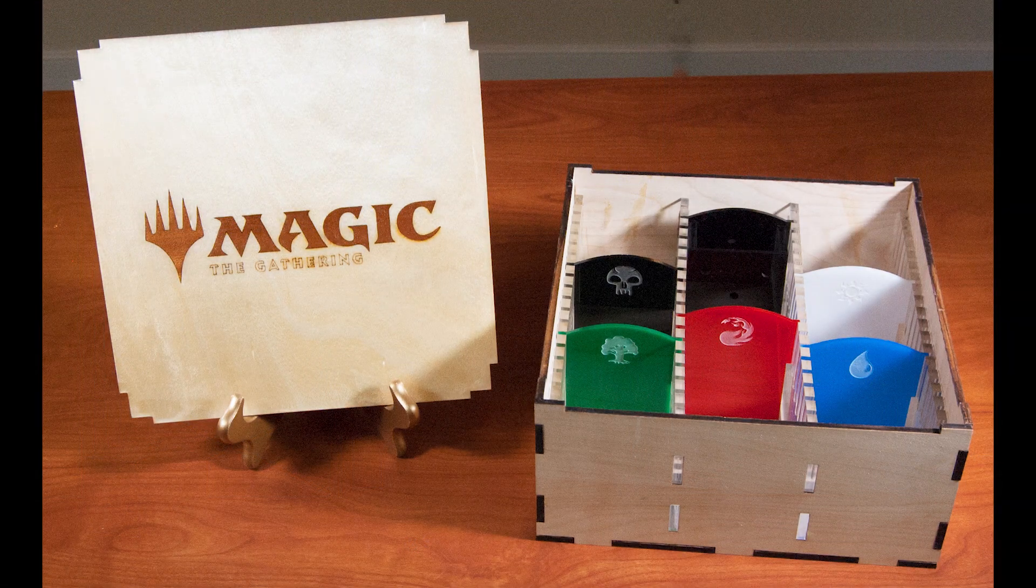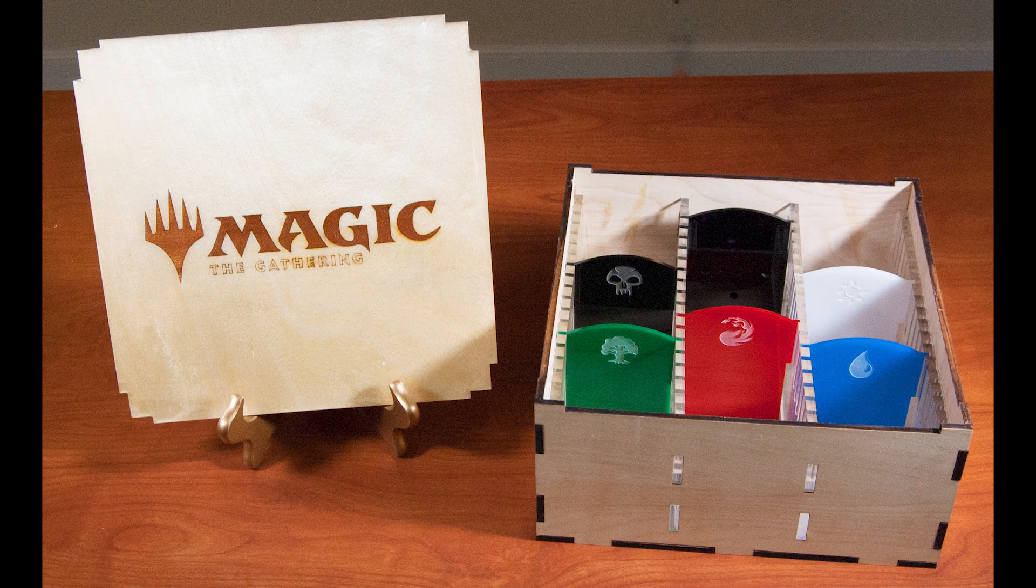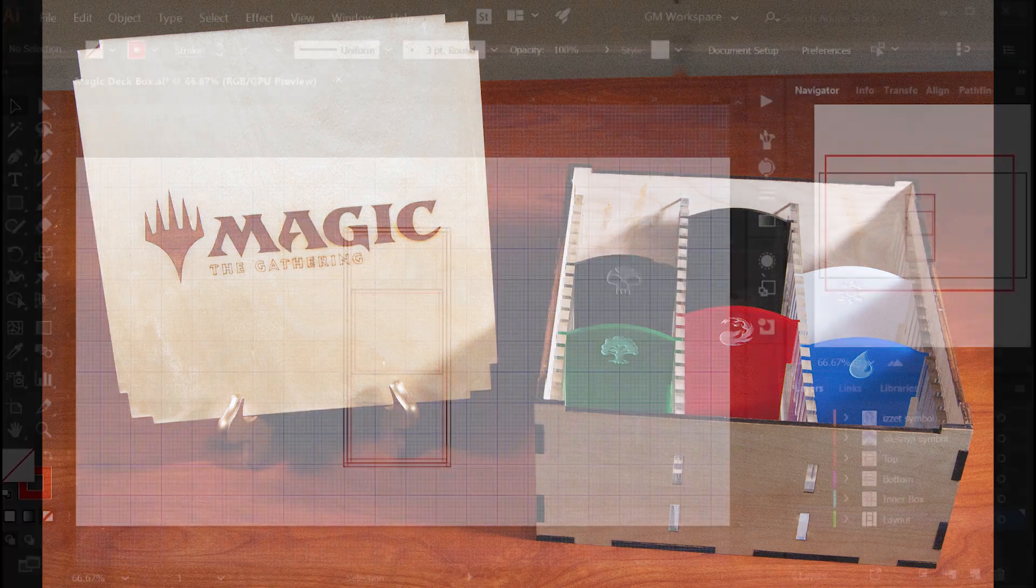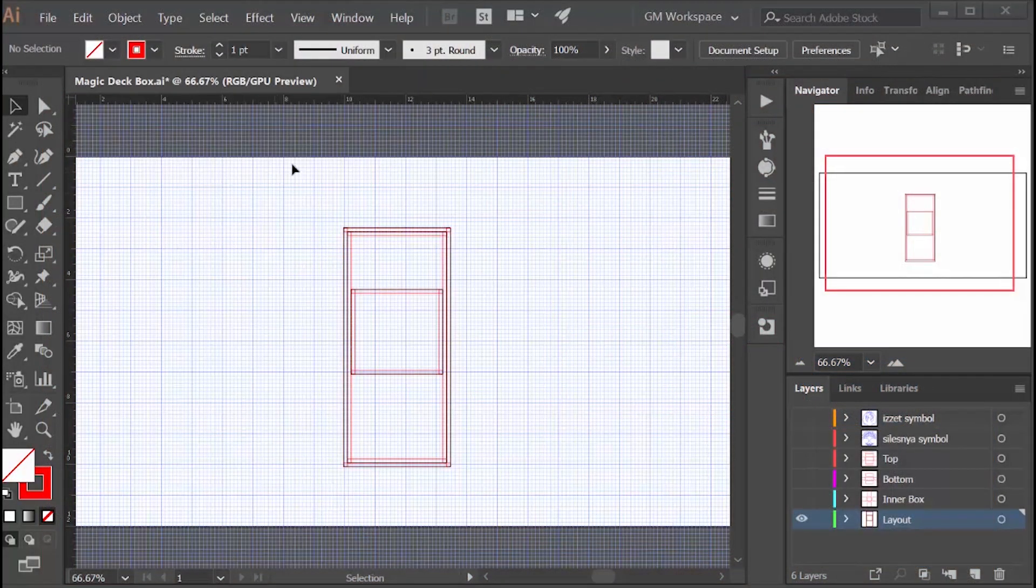I have another project where I make a Magic card box designed to hold all your Magic cards, but I wanted something I could take with me to game night. I started with a top-down layout of how the boxes would fit together. I have the top going over the bottom and an inner box. And then of course I need to also know the height of each of these pieces.